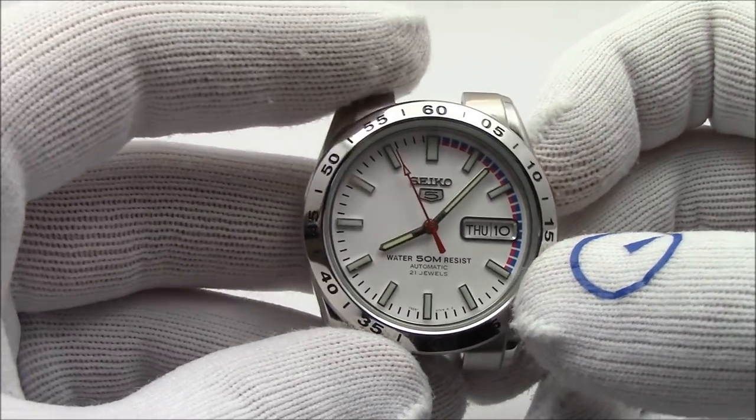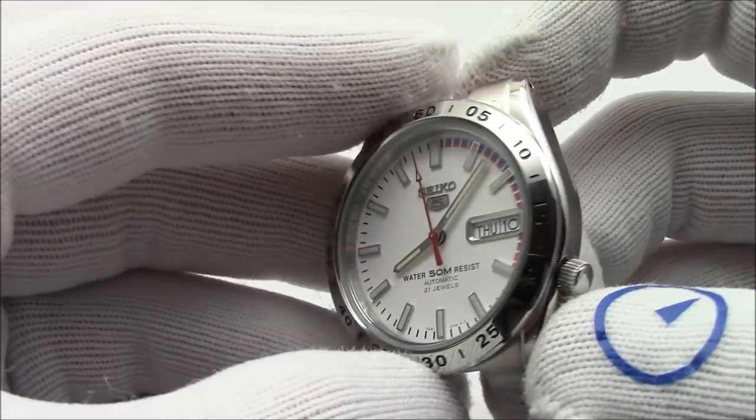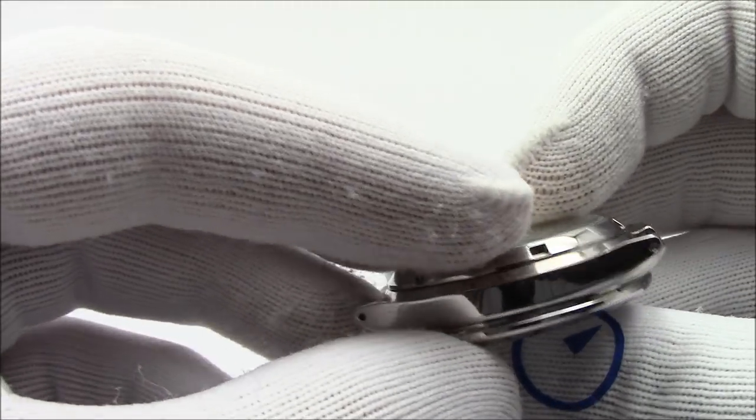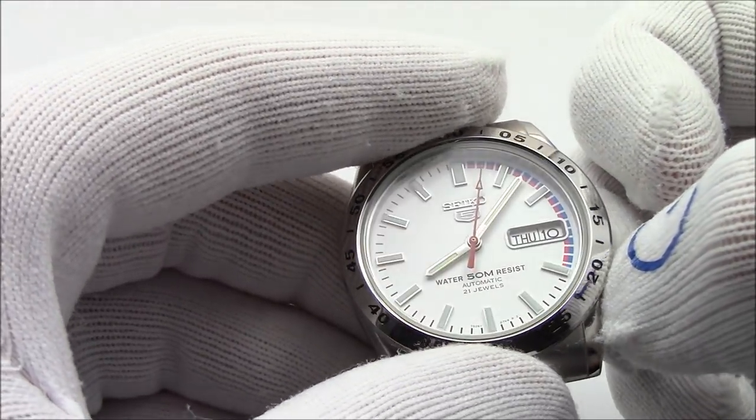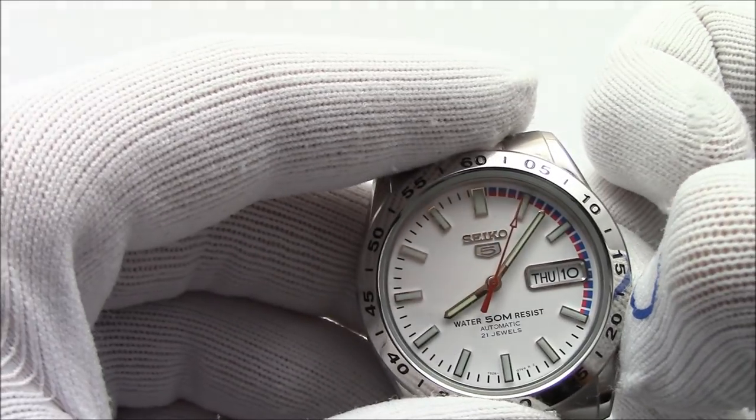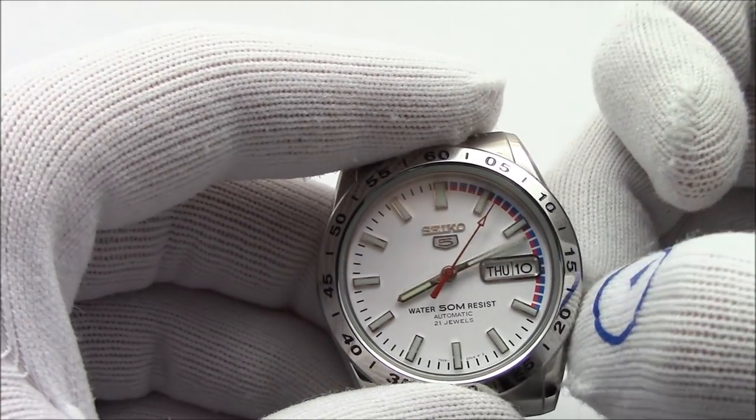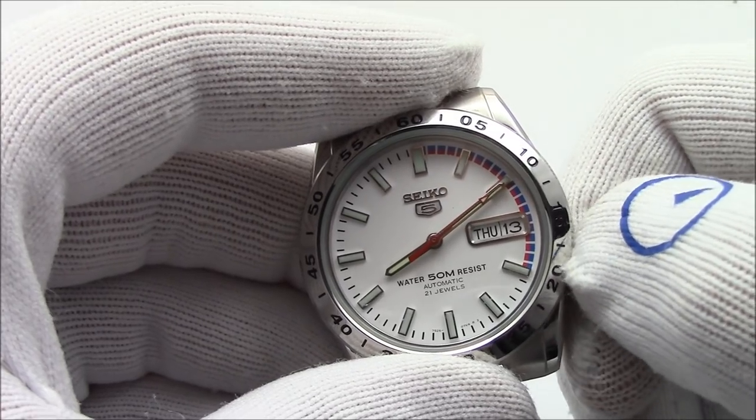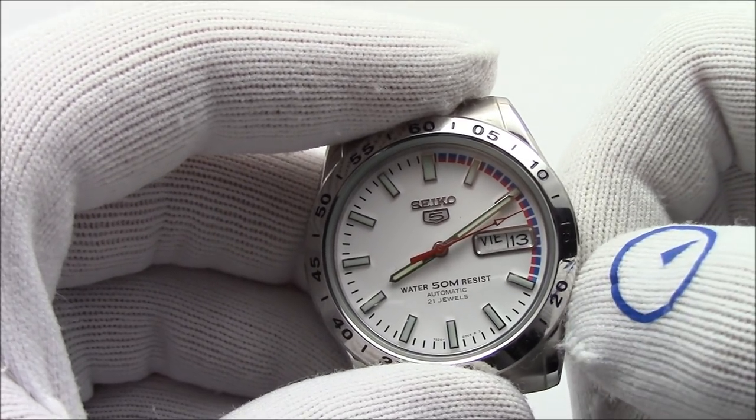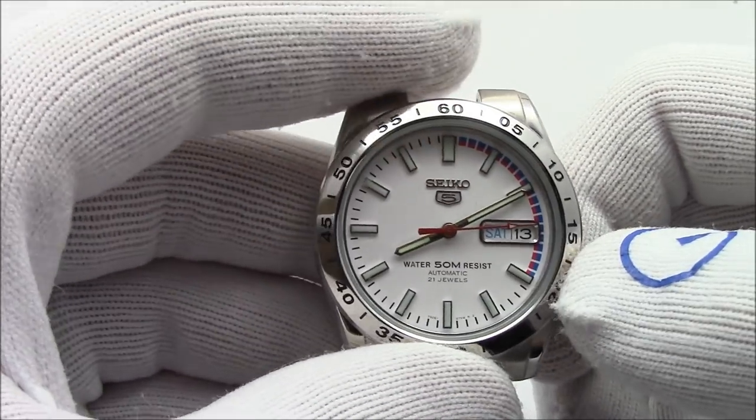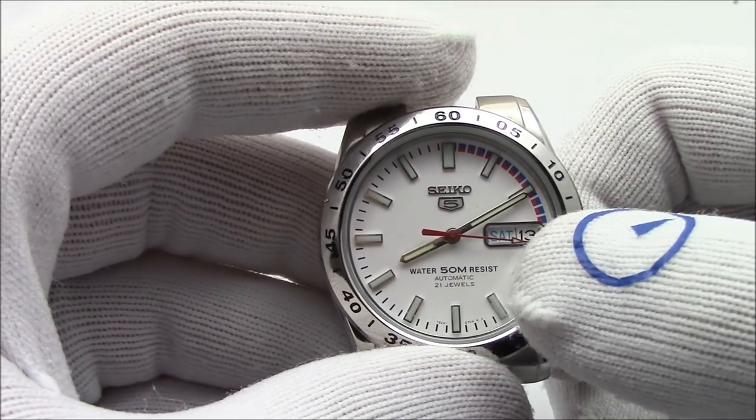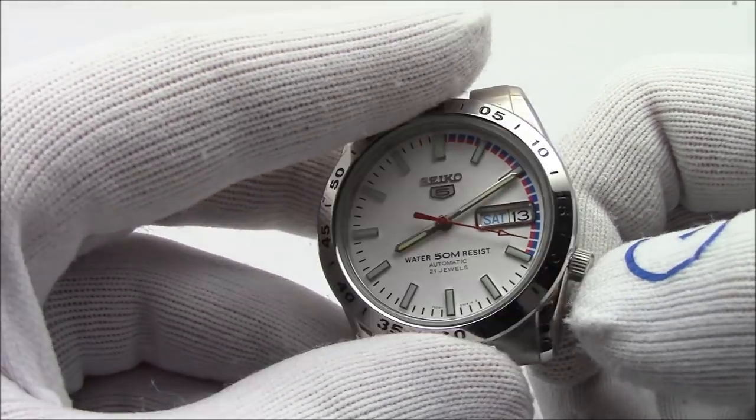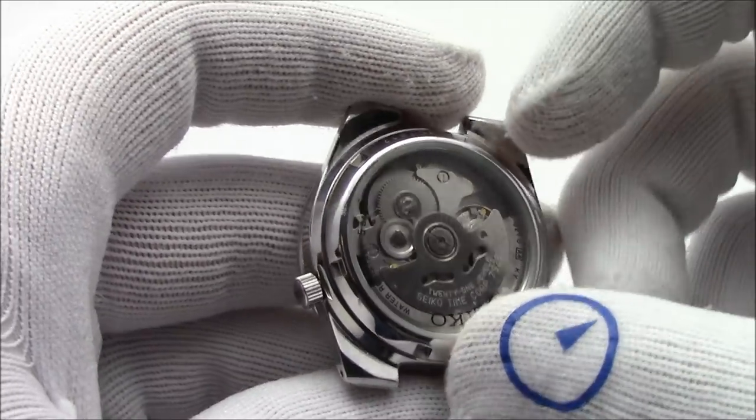So for our example today, I have this white dialed Seagull 5 here. I've taken the bracelet off. This is another one of the watches from the Infinite Junk Bin. It does run. You can see it's running now. Pull it out one click. Turning it clockwise changes the date. Counterclockwise changes the day. It's a two-language wheel like normal, but we need to take out the movement that has the dial and the hands attached to it. And to do that, we need to remove the case back.